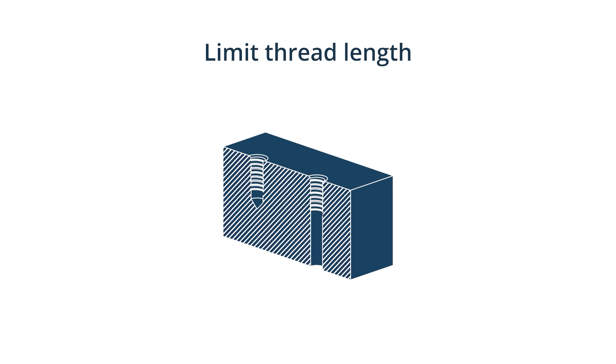7. Limit thread length. Unnecessarily long threads increase machining costs. The strength of the connection does not increase any when the thread length exceeds the size of the diameter by more than 1.5 times. Designing thread should be no longer than two times the hole diameter. For blind holes, add an unthreaded length of at least half the diameter at the bottom of the hole.